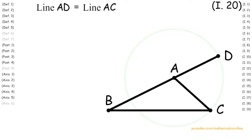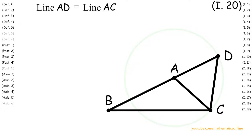Next, we create line CD with Postulate 1. Now since triangle ACD has two sides that are congruent, then by Proposition 5, angle ADC is congruent to angle ACD.